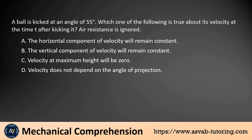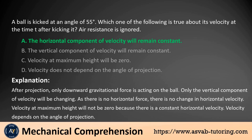A ball is kicked at an angle of 55 degrees. Which one of the following is true about its velocity at time t after kicking it? Air resistance is ignored. A. The horizontal component of velocity will remain constant. B. The vertical component of velocity will remain constant. C. Velocity at maximum height will be 0. D. Velocity does not depend on the angle of projection. The answer is A. After projection, only downward gravitational force acts on the ball, so only the vertical component of velocity changes. With no horizontal force, horizontal velocity remains constant. Velocity at maximum height is not 0 because horizontal velocity persists, and velocity does depend on the angle of projection.